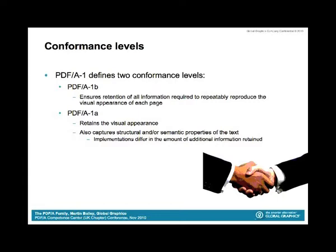The PDF-A1 standard is actually split into two conformance levels. They're named PDF-A1A and PDF-A1B. The A and B are just intended to be neutral because there are some places where one of them is perfectly adequate and there are cases where the other would make more sense. PDF-A1B is, if you like, the lowest common denominator in that it ensures retention of everything you need to make sure that every device shows the page in the same way, whether it's printed or on screen.